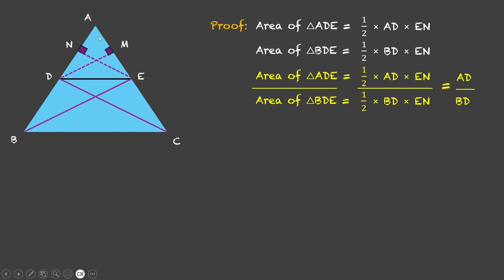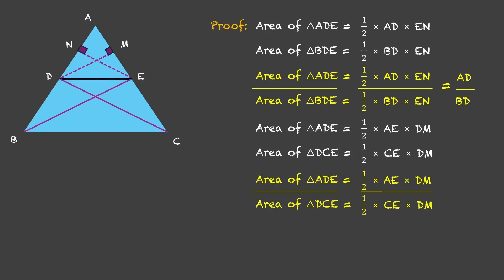Now, think about this. If in this triangle ADE, if we take AE as the base, then the height is DM. So, area of ADE can also be given by half into AE into DM. That's the base and that's the height. Now, if we find the area of triangle DCE. EC is the base. Its height lies outside. The altitude lies outside which is DM. So, this is half into EC into DM. Once again, we divide these two equations and we get this. DM cancels out, half cancels out. We get AE upon EC.